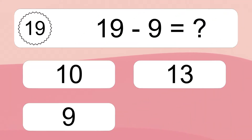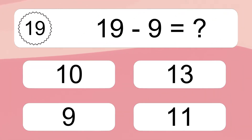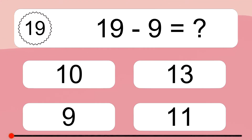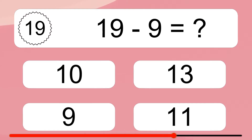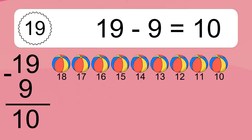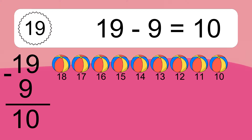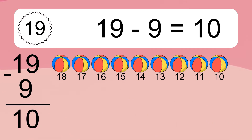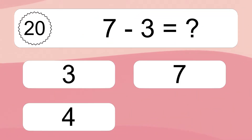19 minus 9 equals what? 19 minus 9 equals 10. Let's count it: 18, 17, 16, 15, 14, 13, 12, 11, 10.